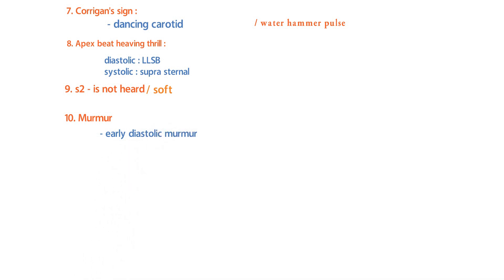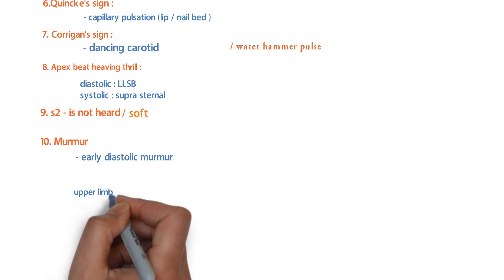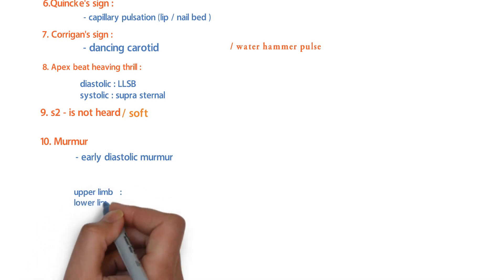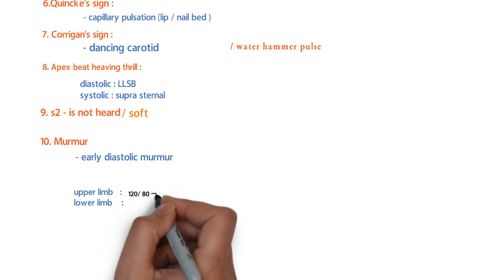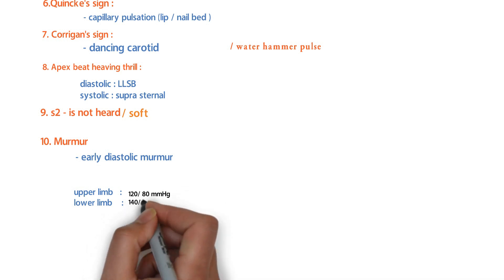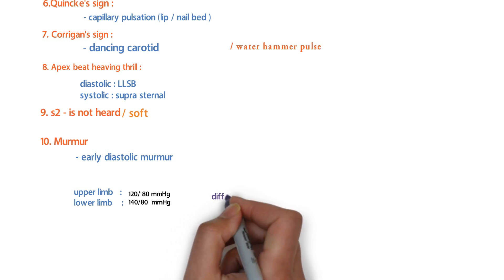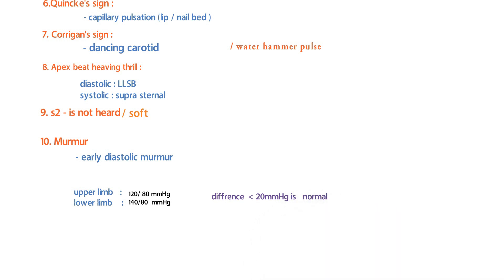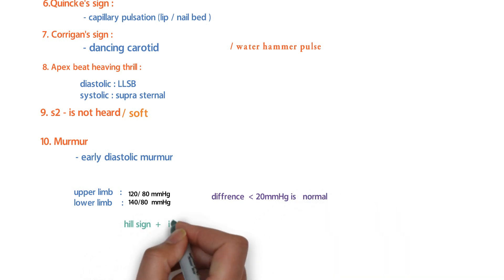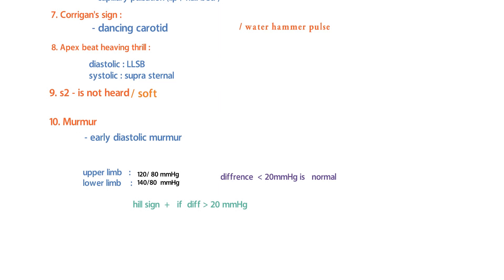To understand Hill's sign, compare blood pressure in the upper and lower limbs. In a normal individual, if the upper limb BP is 120/80 mmHg, the lower limb is around 140/80 mmHg — a difference of less than 20 mmHg. If the difference is more than 20 mmHg, it is a positive Hill's sign, which is present in aortic regurgitation.